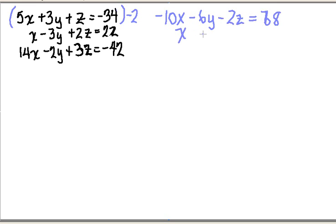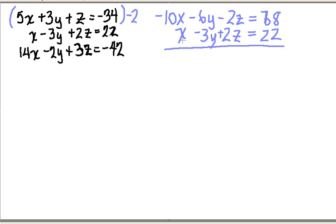Now I'm just going to rewrite my second equation so that I can combine them easily. The way that I eliminate the z variable is just by simply adding the two together. I've got a minus 10x and a positive x, I get a minus 9x. I've got a minus 6y and a minus 3y, I get a minus 9y, and I'm going to set that equal to 68 plus 22, which is 90. So now I have my first equation in two variables — I've eliminated z.